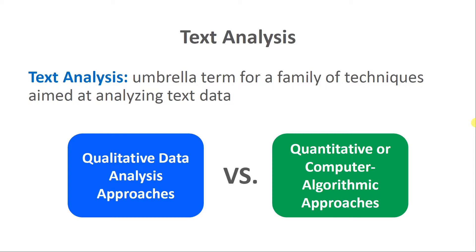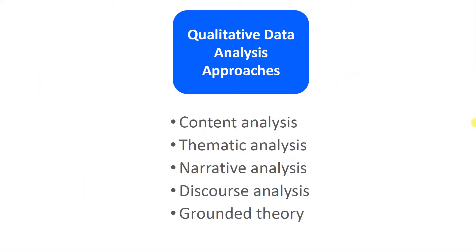Those two approaches are qualitative data analysis approaches, and quantitative or computer algorithmic approaches, some of which today are using artificial intelligence and machine learning. Let's start with the qualitative data analysis approaches. These were obviously some of the first approaches because before computers we needed humans to interpret most anything that was text-based or qualitative data in general, whether that's photos, people speaking orally, and so forth.